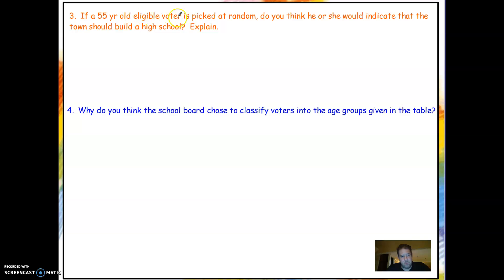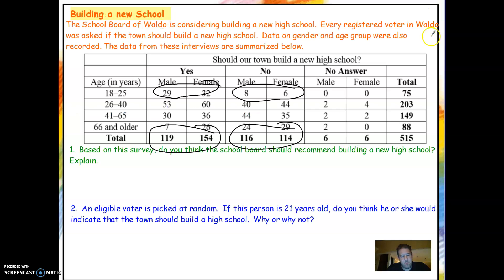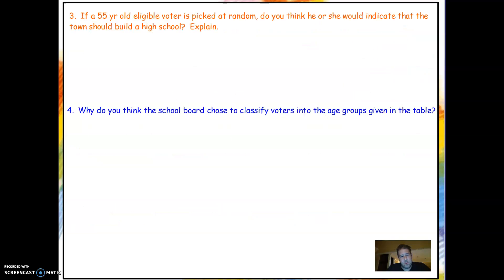If a 55-year-old person is picked at random, do you think they would want to build a new high school? The 55-year-old group adds up to 66 yeses and 79 noes, so I'm going to go with no.